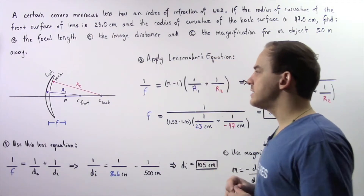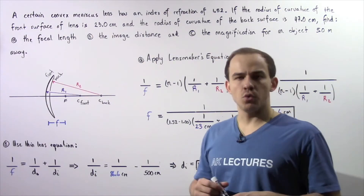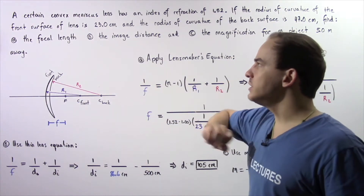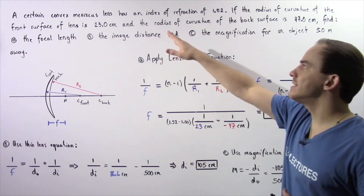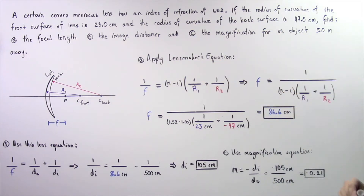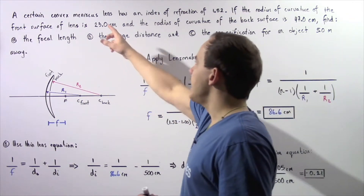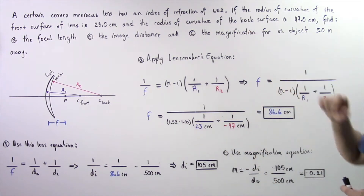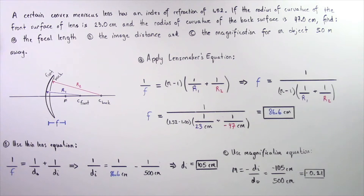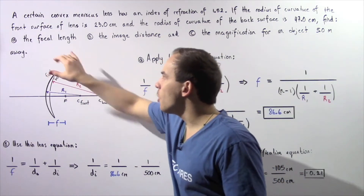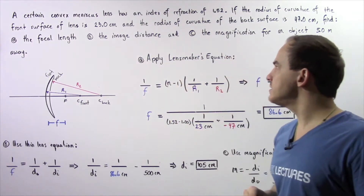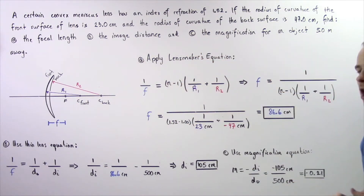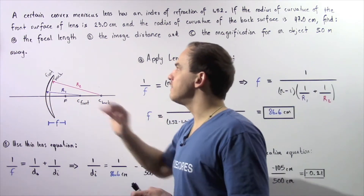Let's look at the following example that deals with the lens maker's equation. A certain convex meniscus lens has an index of refraction of 1.52. The radius of curvature of the front surface is 23 centimeters and the radius of curvature of the back surface is 47 centimeters. We want to find: A) the focal length, B) the image distance, and C) the magnification of an object placed 5 meters to the left of the lens.